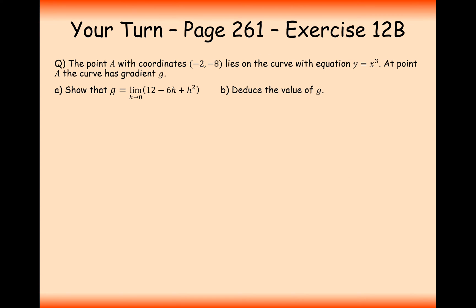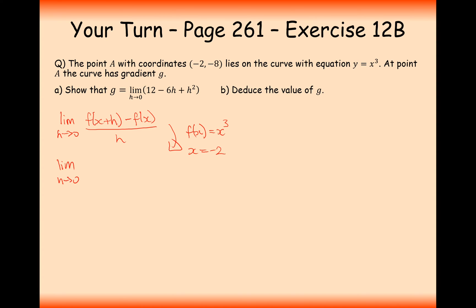Your turn — pause the video and have a go at this question. Well done for having a go. The first thing we need to do is set up what the differential is doing: it's taking the limit as h tends towards zero of f of x plus h minus f of x all over h. We're substituting in the fact that the function of x is x cubed this time, and the x value is minus 2. So let's substitute these values in — it's going to be minus 2 plus h, all cubed, minus minus 2 cubed, all over h.